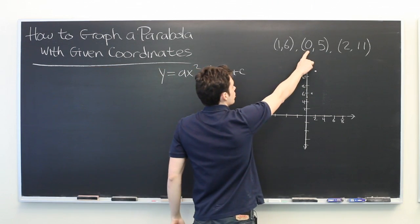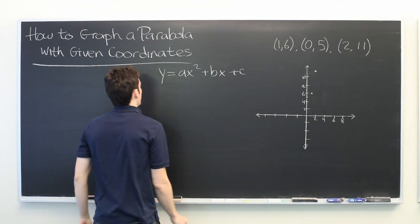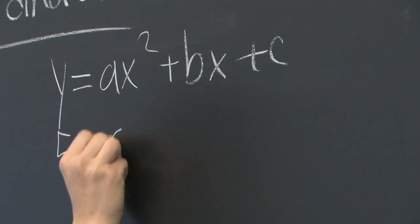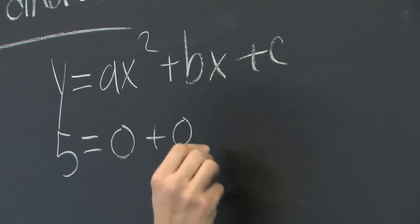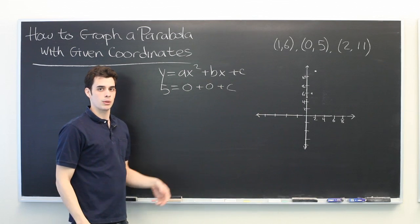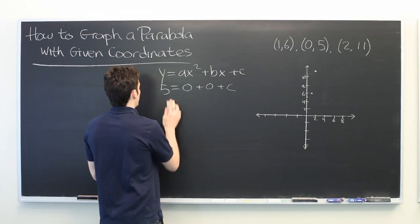Well, if we plug in 0 comma 5, right off the bat we can see 5 equals 0 plus 0 plus c. So therefore, c must be equal to 5. Excellent.